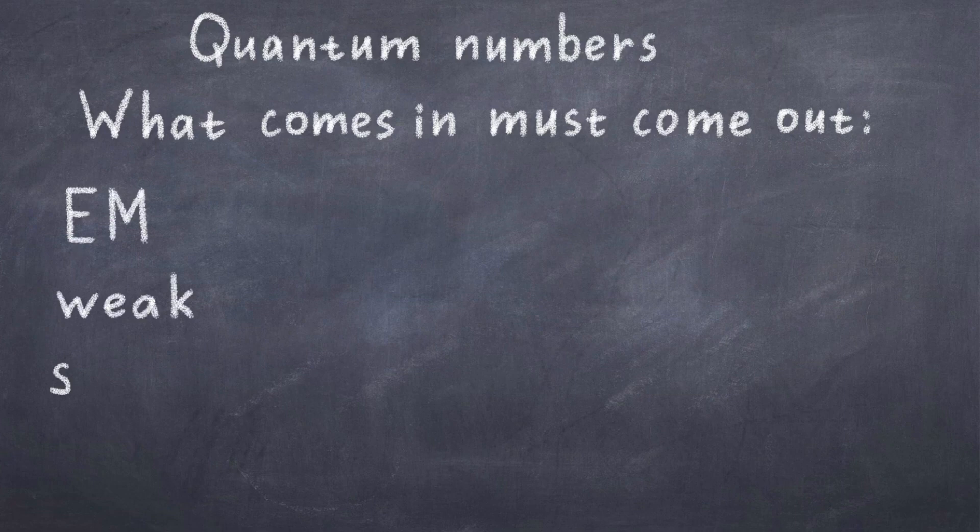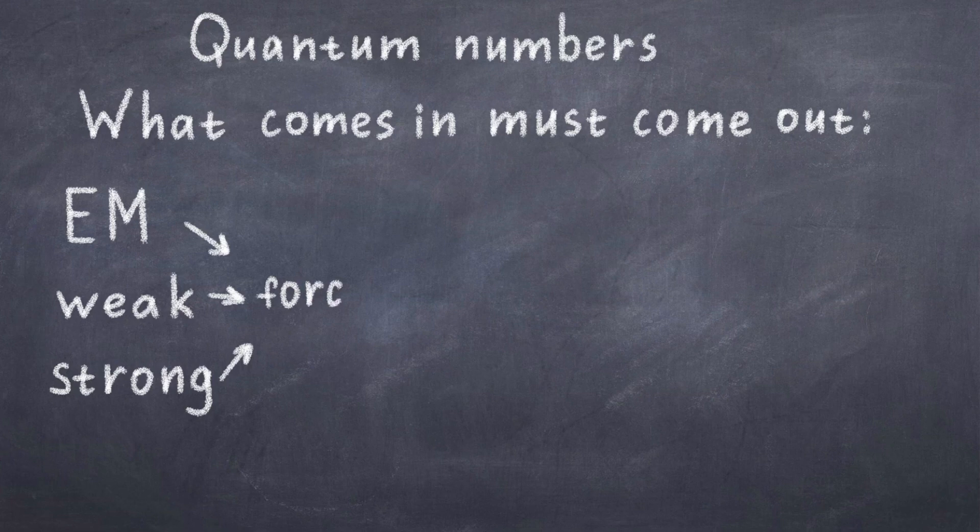The key to figuring out what is allowed is conservation of quantum numbers. What comes in must come out. As discussed in the video about the standard model, we have three fundamental forces to work with in particle physics. We have the electromagnetic force, the weak force, and the strong force. We will see that the weak force is a bit special.